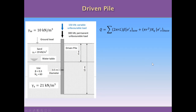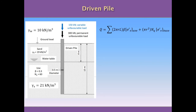First, we need to recognize that the formula we're going to use is the beta method, because this is a driven pile in sand. The formula has a summation with two terms in this particular problem — one for the first layer and one for the second layer — because this part of the formula defines the pile capacity due to friction. We evaluate the lateral area of the pile, apply the beta coefficient, and calculate an average effective stress for each layer.